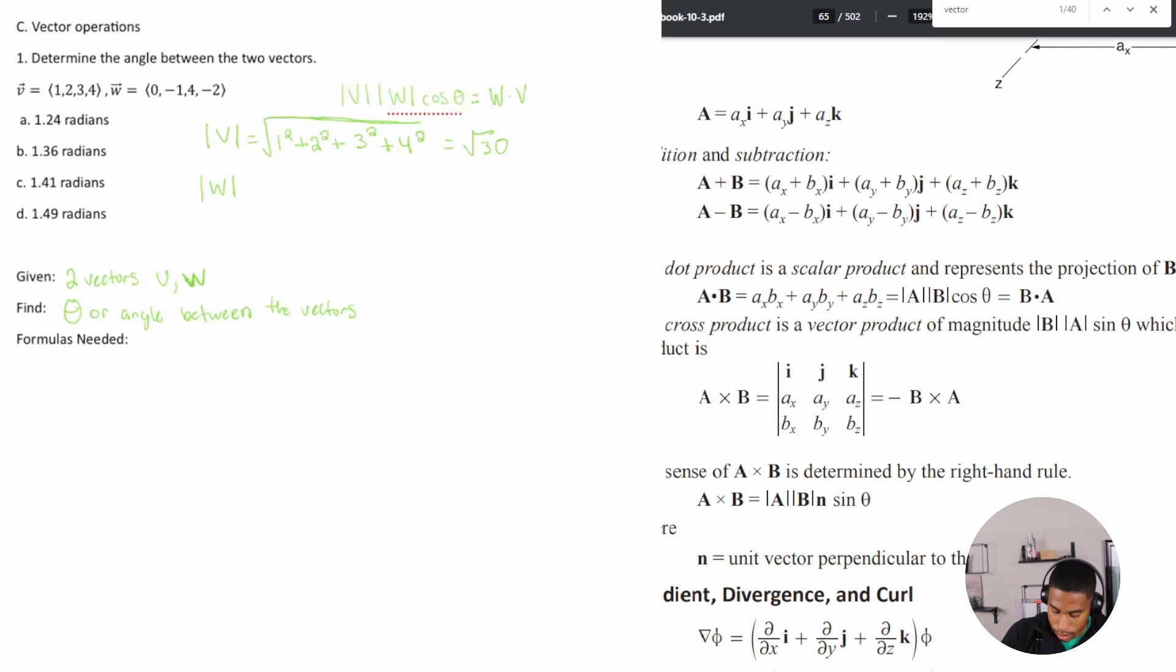Plus my W magnitude. Well, that is equal to the square root of zero squared plus negative one squared plus four squared plus negative two squared. And I get for my W, square root of 21. All right, so we have our V, we have our W, we don't know what cosine theta is. This is the question mark. That's what we're trying to find. And then we just need W dot V.